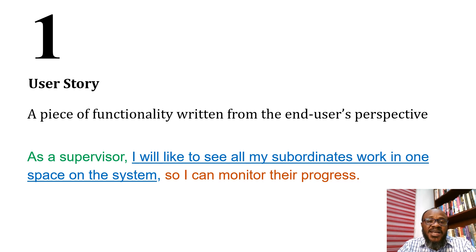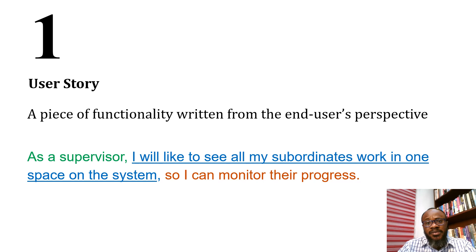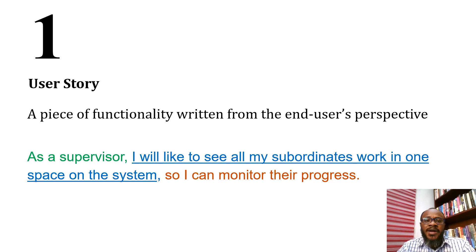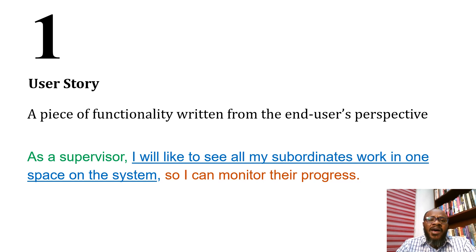A user story typically includes an acceptance criteria, so that once the goal is established we can test it against that criteria. It must be estimable and testable. One rule with user stories is that they should be completed in no more than three days. If a user story will require more than three days, it's too big — you need to split it up.